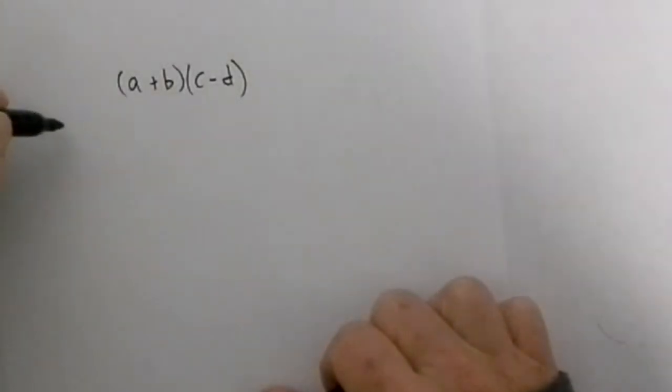In order to solve this problem we will FOIL the problem. FOIL stands for First Outer Inner Last.